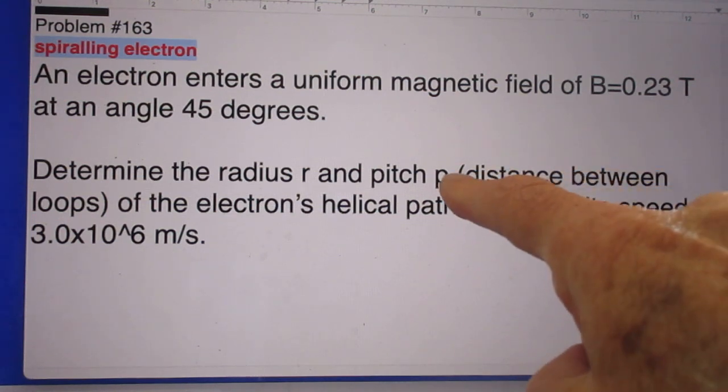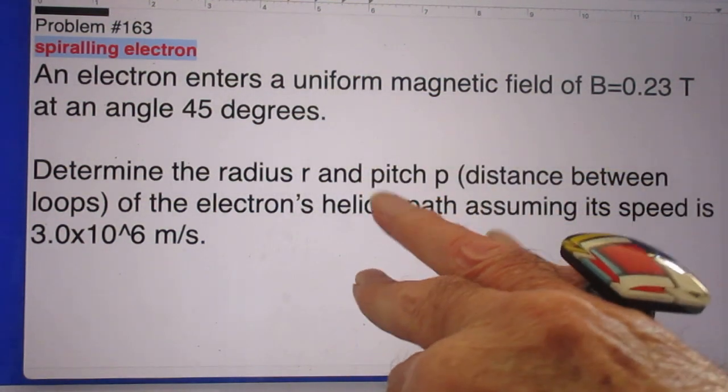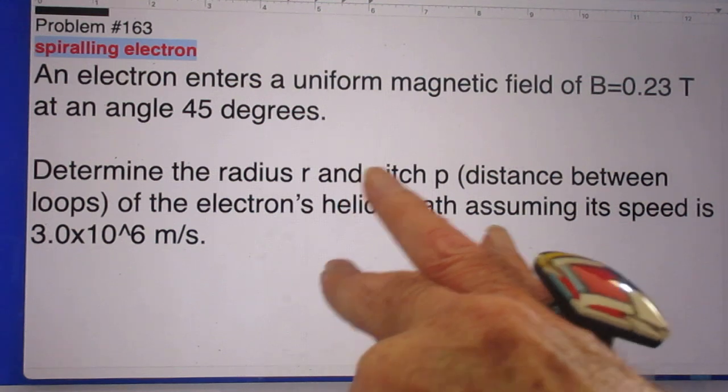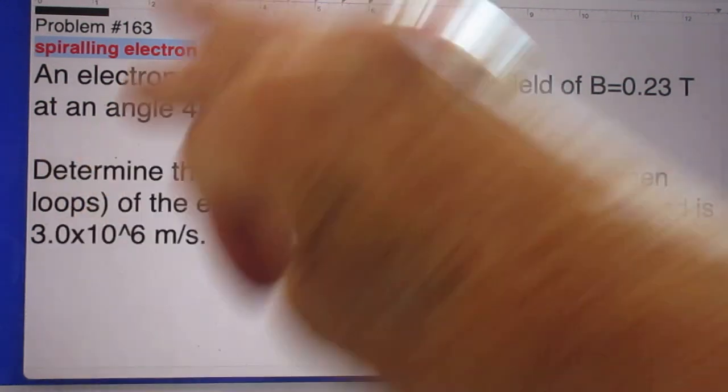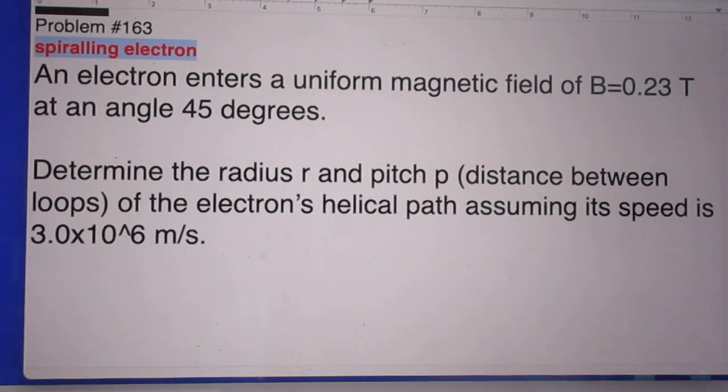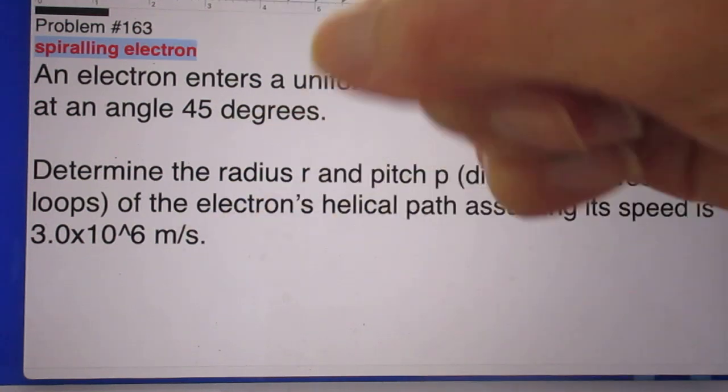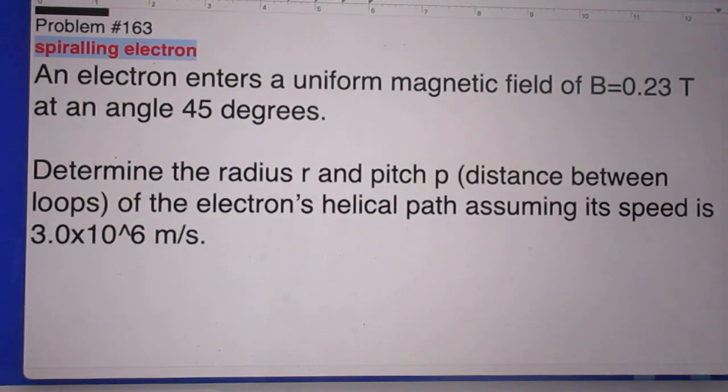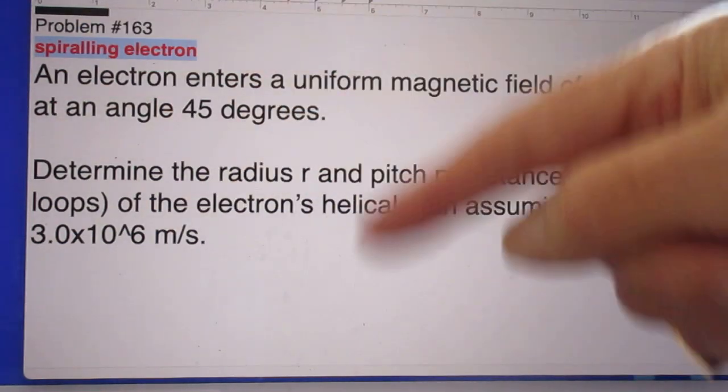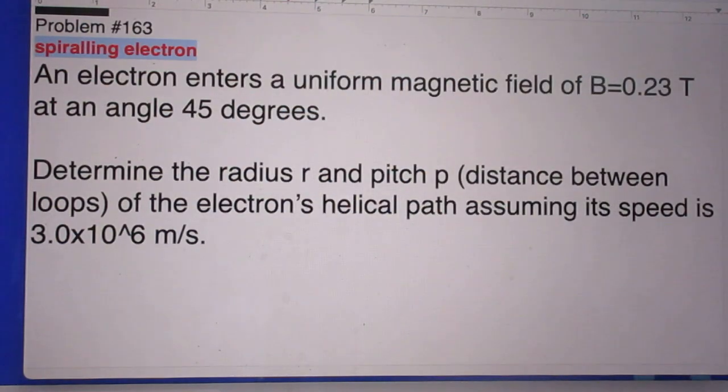And the pitch is defined as the distance between loops. So when you make a picture, you draw a picture of this helical path, then there's some kind of loops and these loops are separated. That's called pitch, and we want to know the distance between those loops.